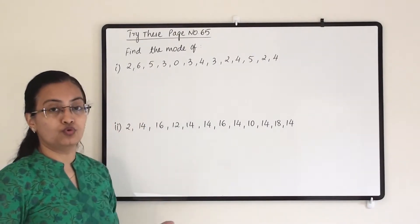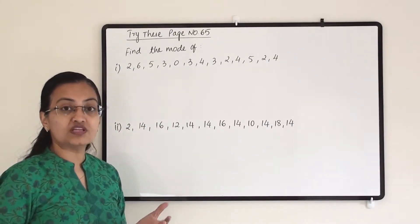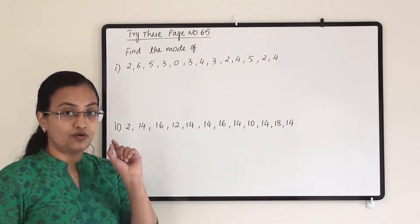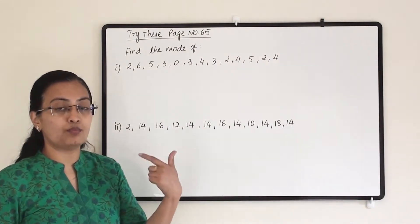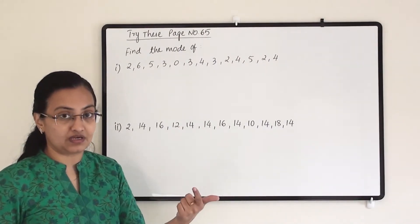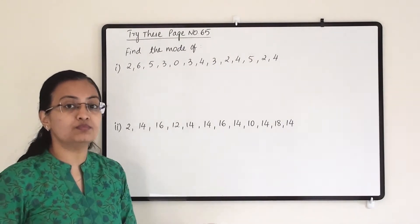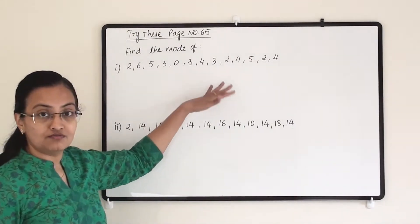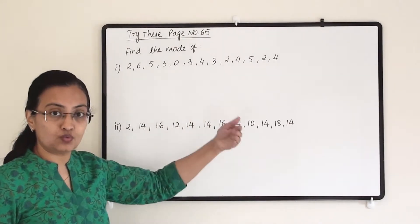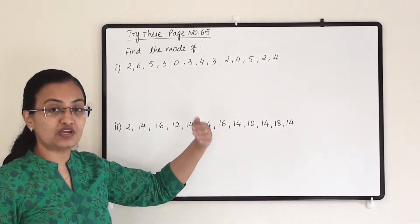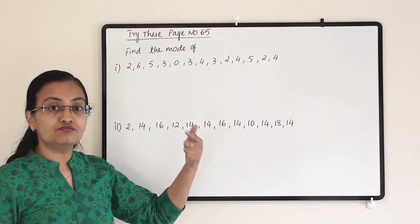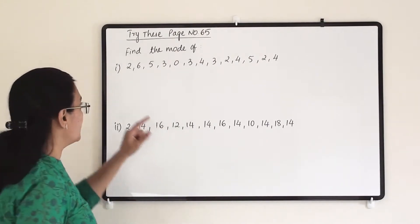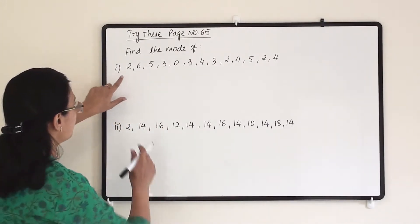What is the meaning of mode? Mode means the frequently occurring observation — the one observation which keeps on repeating, and that too the maximum number of times. There will be many observations coming more than once, but we have to find the number which is coming the maximum number of times.